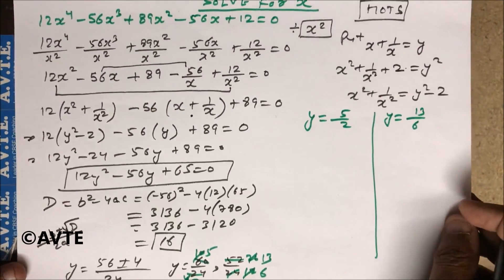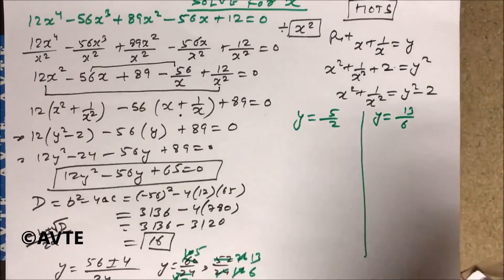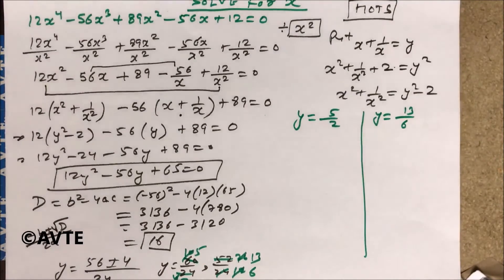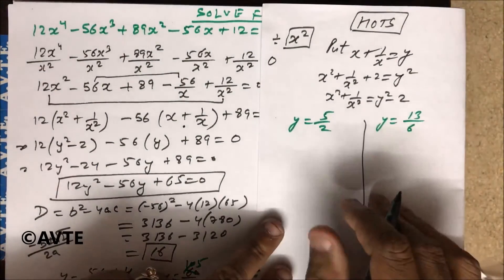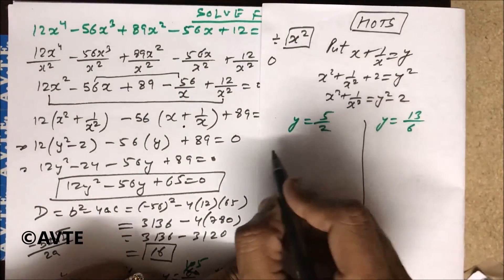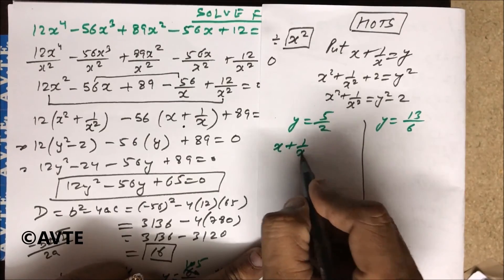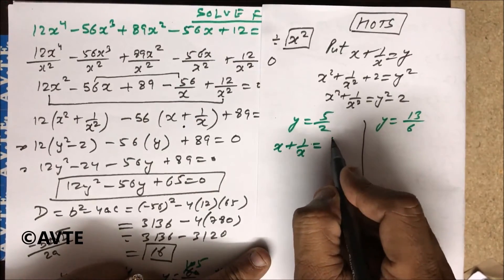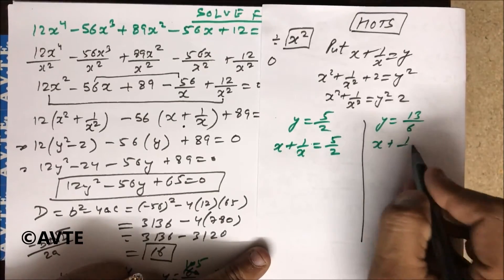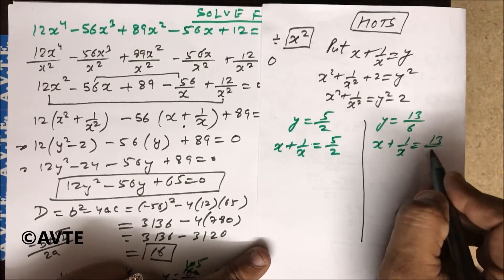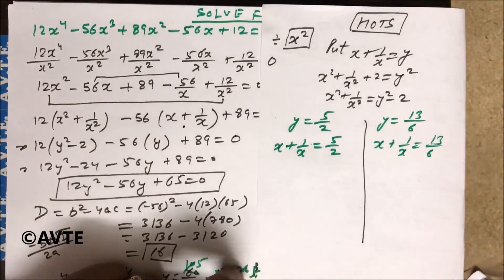So you have two answers of y but this is not your final answer. So question asks for x. You have to find the value of x. So x + 1/x = 5/2 and x + 1/x = 13/6. You have to solve these two equations.